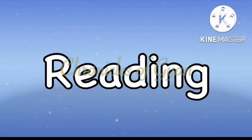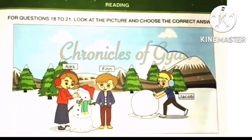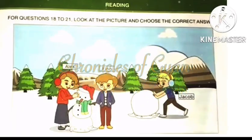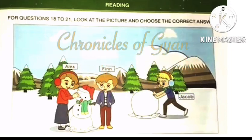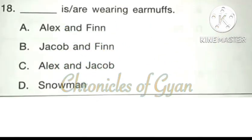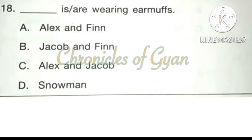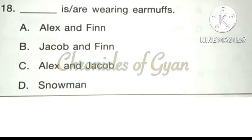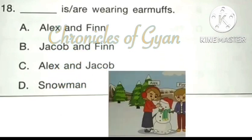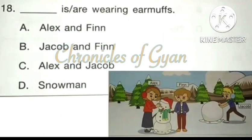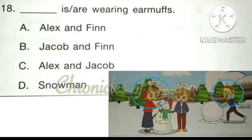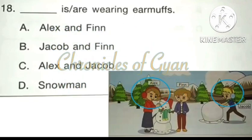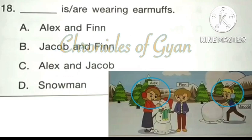The second section is reading. For questions 18 to 21, look at the picture and choose the correct answer. Question 18: Dash is/are wearing earmuffs. Looking at the image, Alex and Jacob are wearing earmuffs. The correct answer is option C: Alex and Jacob.